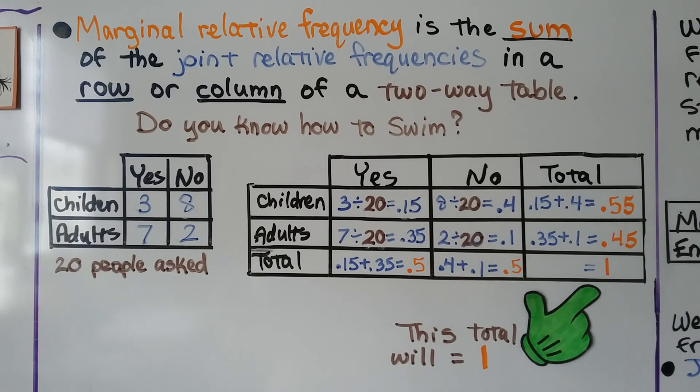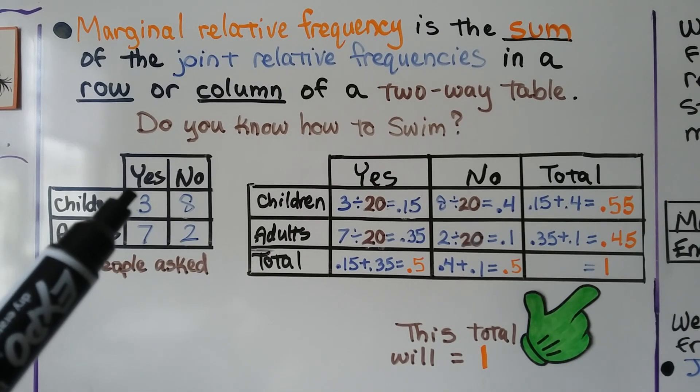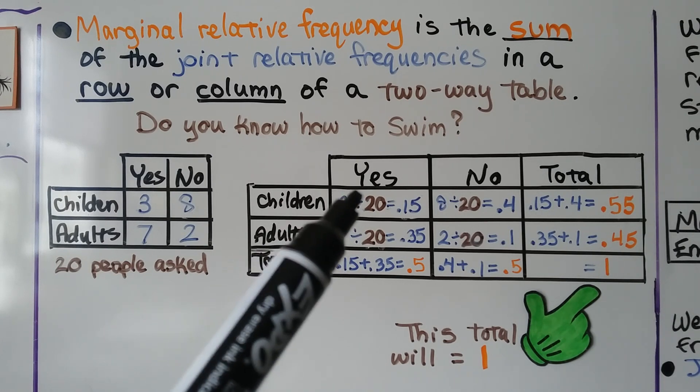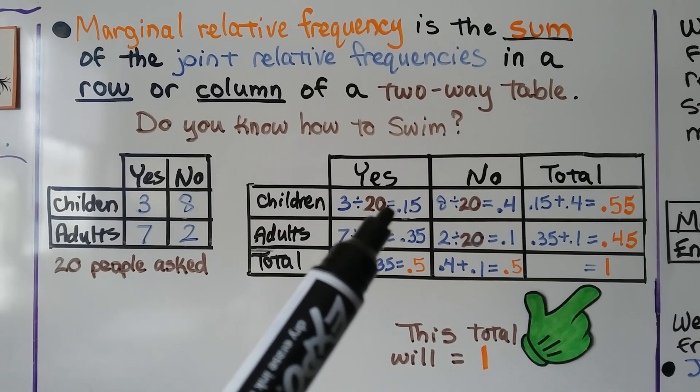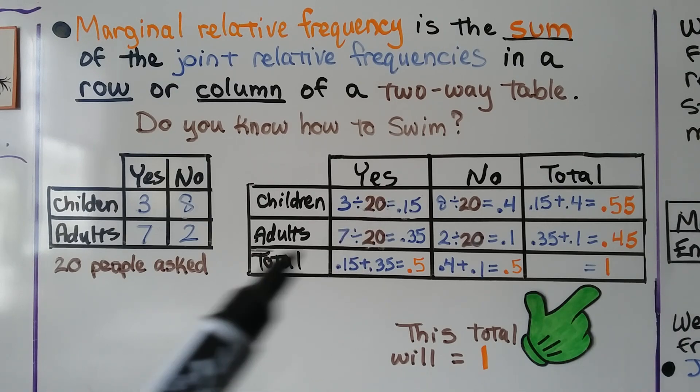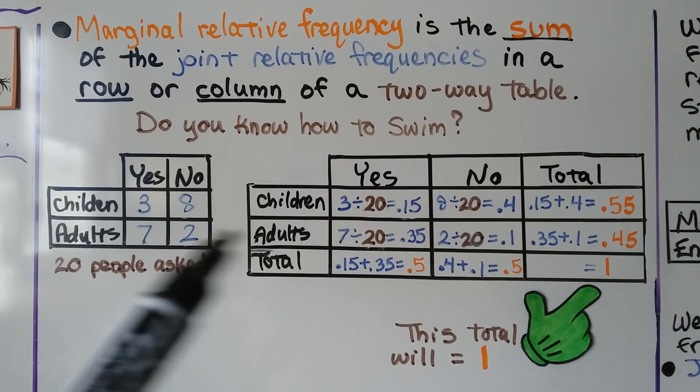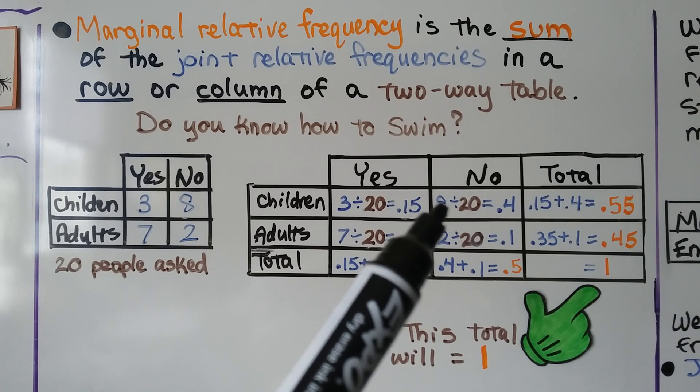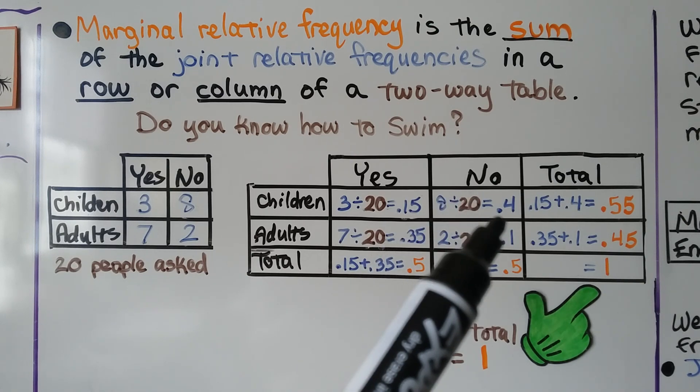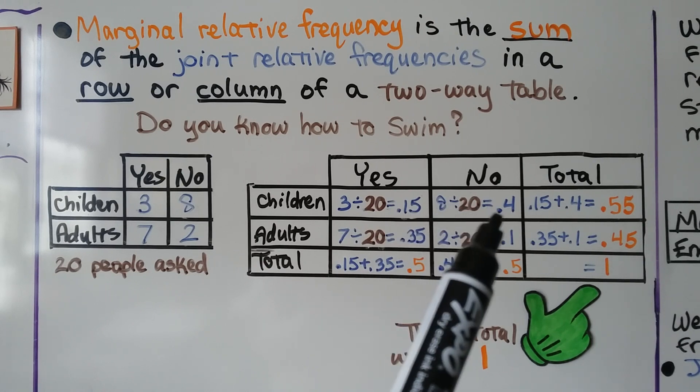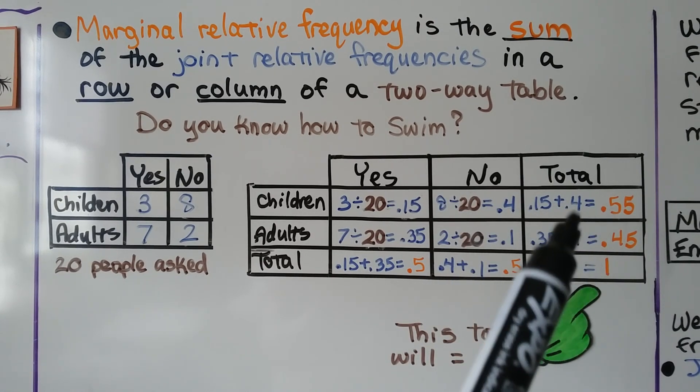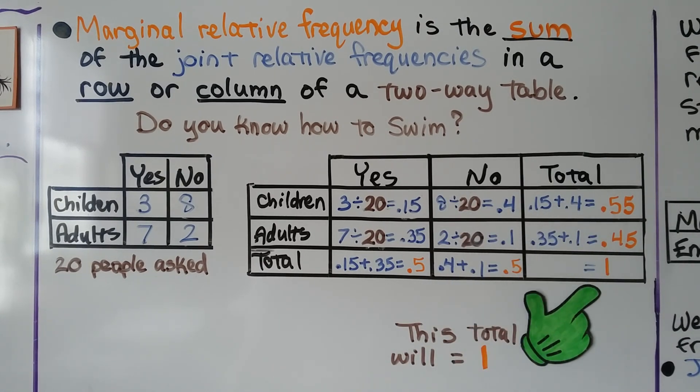For the marginal relative frequency we take this three divided by twenty, so that's three-twentieths, and it's going to equal 0.15. For the no we have eight divided by 20 or eight-twentieths. That's going to equal 0.4. We total up the 0.15 and the 0.4 and we get 0.55 for our total for our marginal relative frequency.